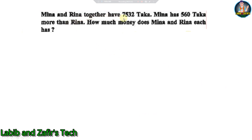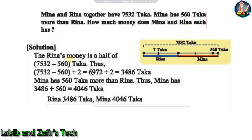Next problem: Mina and Rina together have 7532 taka. Mina has 560 taka more than Rina. How much money does each have? Solution: Rina's money = (7532 − 560) ÷ 2 = 3486 taka. Mina has 560 taka more than Rina, so Mina = 3486 + 560 = 4046 taka. Answer: Rina 3486 taka, Mina 4046 taka.